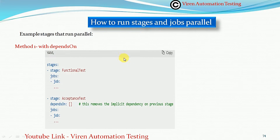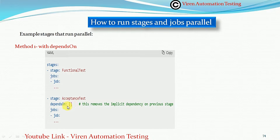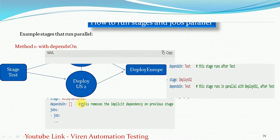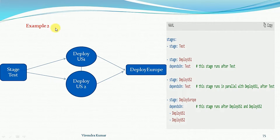On my screen you can see this is a demo YAML pipeline where stages are defined. There is stage one and stage two. When we leave the bracket empty after the dependsOn keyword, this removes the implicit dependency on the previous stage. That means this statement will give you parallel execution of the stages.